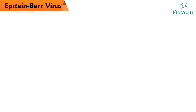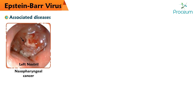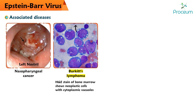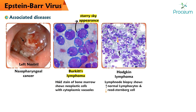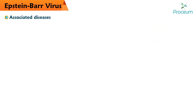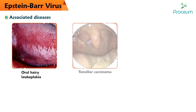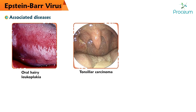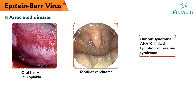Epstein-Barr virus associated diseases include nasopharyngeal cancer, Burkitt's lymphoma (characterized by starry sky appearance), Hodgkin and non-Hodgkin's lymphoma, oral hairy leukoplakia, tonsillar carcinoma, and Duncan syndrome, also known as X-linked lymphoproliferative syndrome.